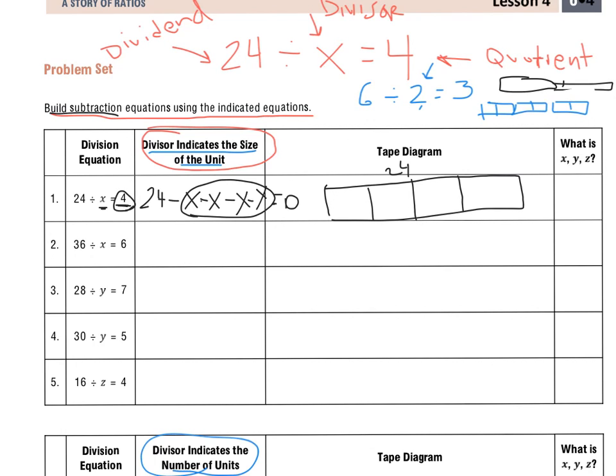because I know if I subtract six four times from 24, I'm going to get zero. And then I'm going to circle my groups of, my four groups. So what does x equal? It equals the size of the unit. So inside of one of these units that I circled, there's six.